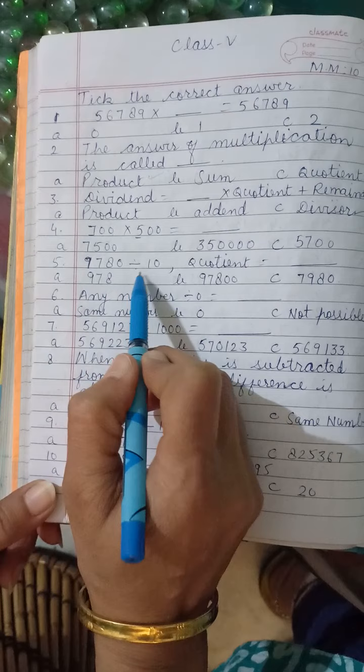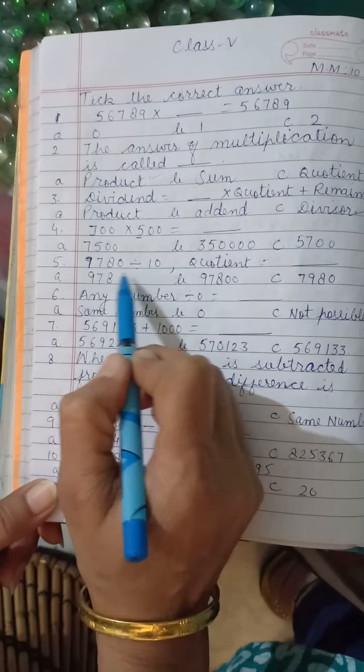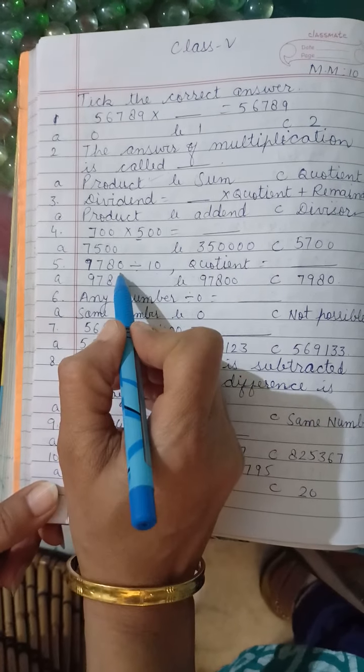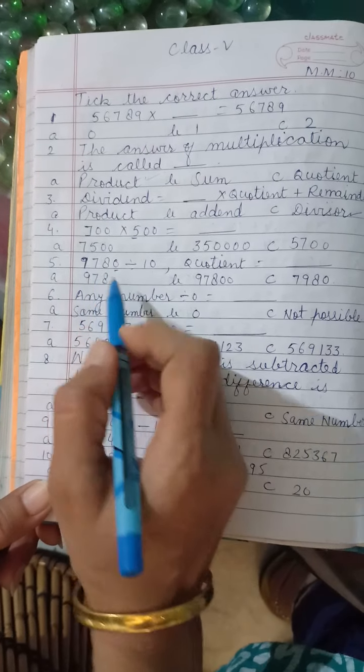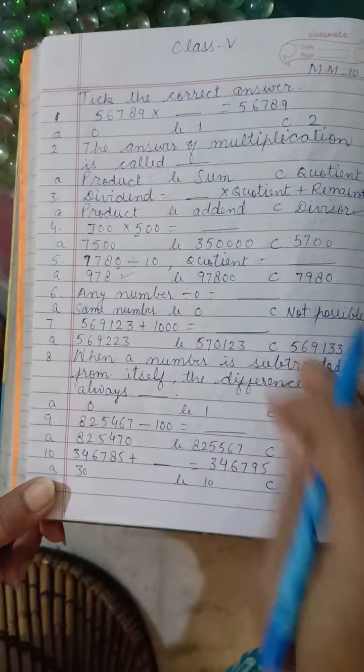Then 9780 divided by 10. When you will divide by 10, what you will see? This is the 0. Like it, you will divide. Then 978. This is the correct answer for it.